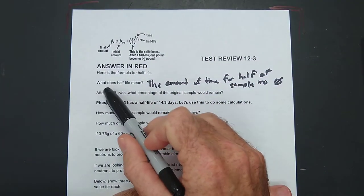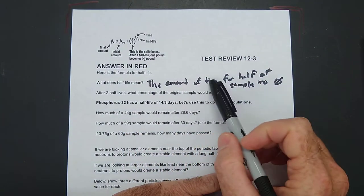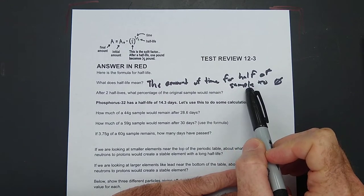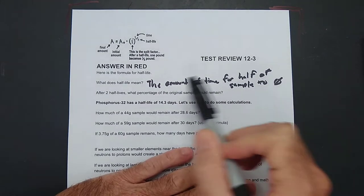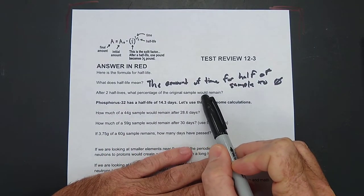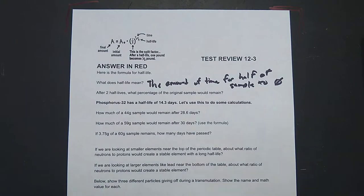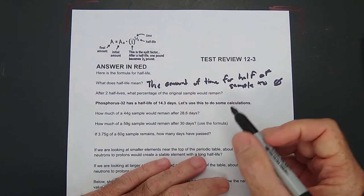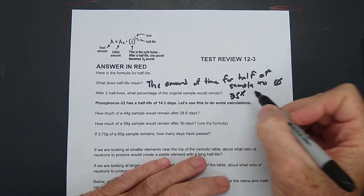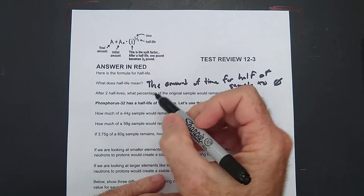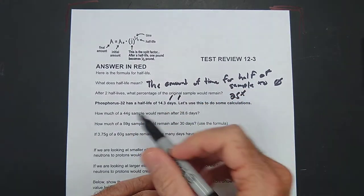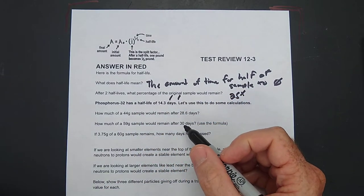Question number one, what does half-life mean? It's the amount of time for half of the sample of a radioactive element to disappear. After two half-lives, what percentage of the original sample would remain? Well, 25%, because you divide it in half twice. So after one half-life, you'd have 50%.